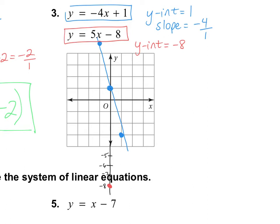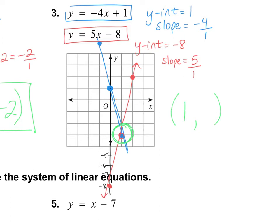Now we count the slope, which is 5 — meaning 5 over 1. Starting way down at negative 8, I go up 1, 2, 3, 4, 5 and over 1 — and they share that point right there! I continue for completion: up 1, 2, 3, 4, 5 over 1 for a second point, giving us the second line. I notice I didn't graph the blue line well enough — it should pass through that intersection point. The answer: starting from the origin, 1 to the right is positive 1, and 3 down is negative 3. The answer for number 3 is 1 comma negative 3.